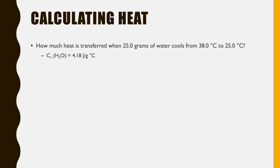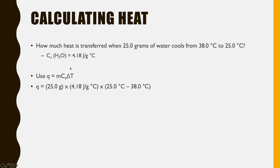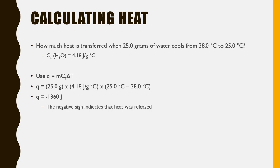Here's a quick sample calculation: how much heat is transferred when 25 grams of water cools from 38 degrees Celsius to 25 degrees Celsius? Using the specific heat of water (4.18 J/g°C) and Q = mcΔT, with delta T as final minus initial (25 minus 38), we get a negative delta T and therefore a negative Q. If temperature is decreasing, Q should always be negative, indicating that the substance is losing heat.